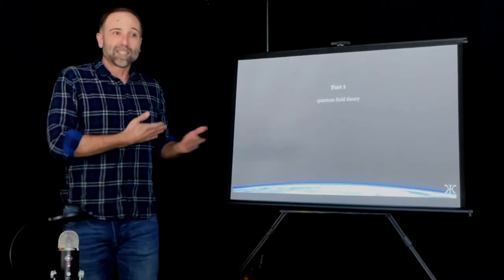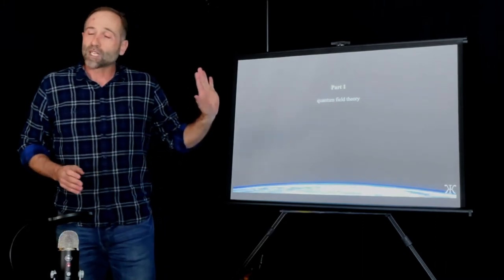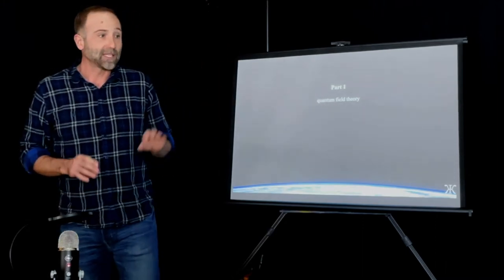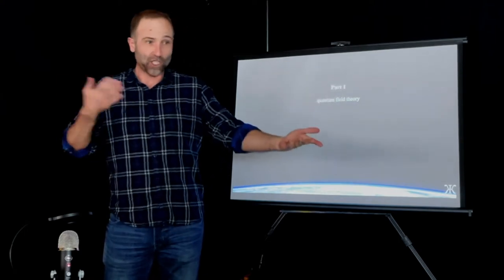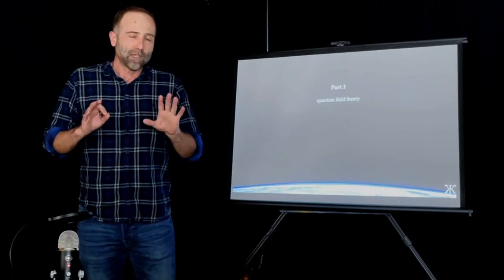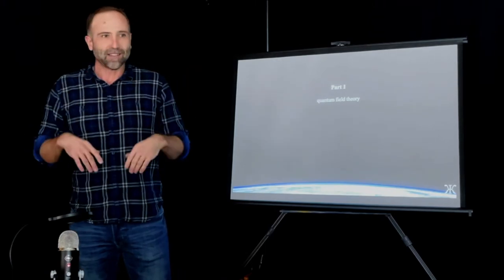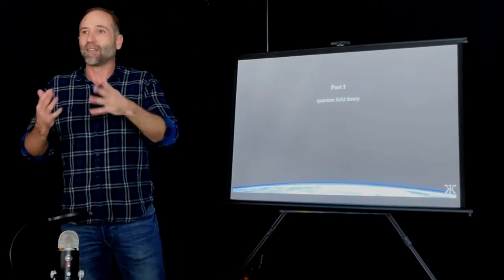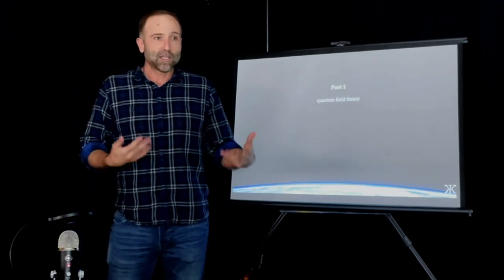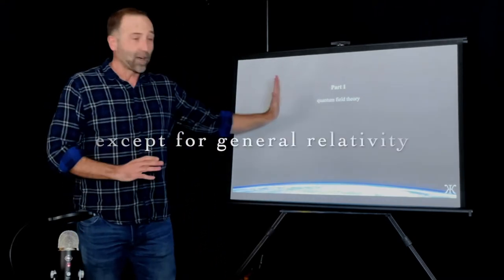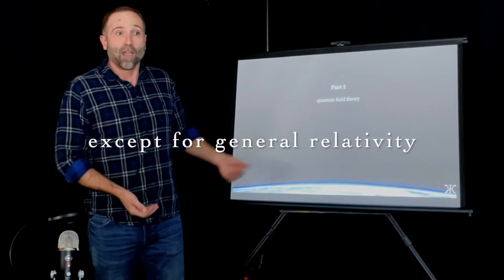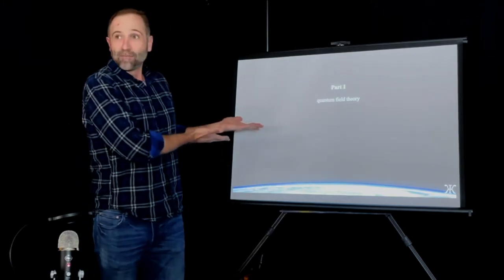When we put those measured values in as the parameters of quantum field theory, it works like a charm. It explains everything in physics: quantum mechanics, general relativity, chemistry, and all the way up. On the fundamental levels. We have complexity things and emergence things and consciousness that we still try to understand, but on the fundamental side of all of science, we get everything from quantum field theory. We just don't have an explanation for why it's that way.